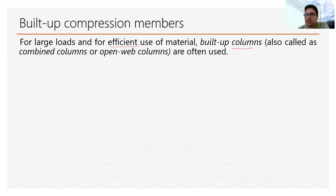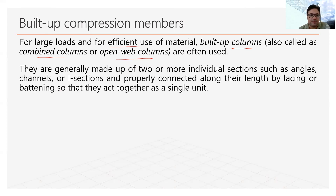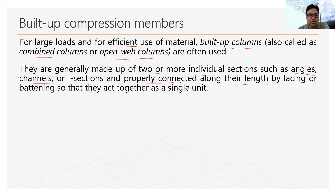Built-up columns are also known as combined columns or open web columns. Generally, we use two or more sections so that they act as a single unit. Built-up sections are generally made up of two or more individual sections such as angle sections, channel sections, and eye sections, and they are properly connected along their length by lacing or battening.